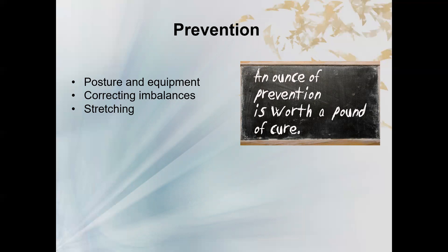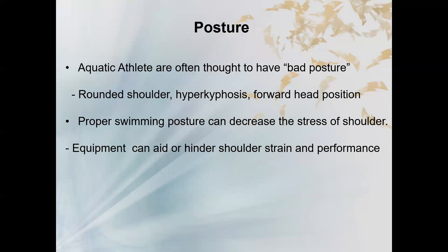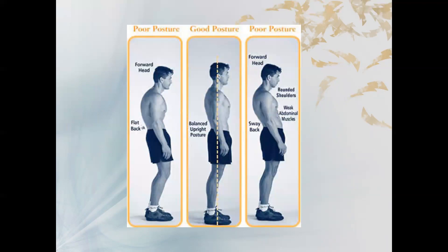Moving on to injury prevention: posture, equipment, correcting imbalances, and stretching. Aquatic athletes are often thought to have poor posture — rounded shoulders, kyphosis, and forward head position. Proper swimming posture can decrease shoulder stress. Equipment can aid or hinder shoulder strain and performance. Poor posture includes forward head, kyphotic back, loss of lordosis, and knees in fixed flexion. Good posture is fully upright and neutral.